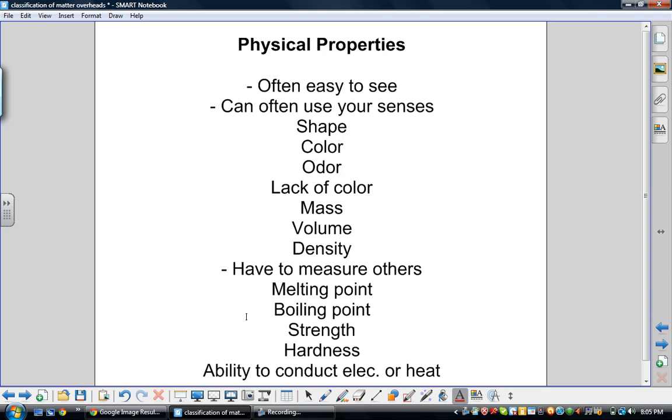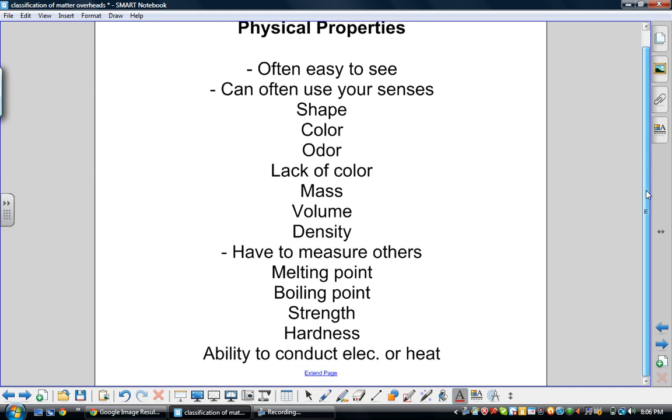Moving on to section two of the chapter: properties of matter, physical properties and chemical properties. Physical properties are often easy to see or observe using your senses. Things like shape, color, odor, lack of color, mass, volume, density. Sometimes you can't directly observe it, you have to measure it, like finding an object's melting point or boiling point, how strong it is, how hard it is, whether or not it can conduct electricity or conduct heat.